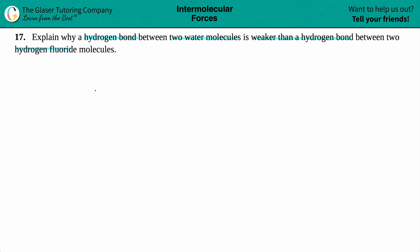So we have two compounds here. We're talking about water and we're talking about hydrogen fluoride. Water is H₂O. For hydrogen fluoride, we can use our crisscross method. Fluoride — between hydrogen and fluorine on the periodic table, hydrogen is a plus one charge and fluorine is a minus one charge. One to one, this means that hydrogen fluoride has to be HF.